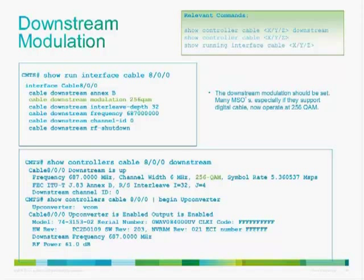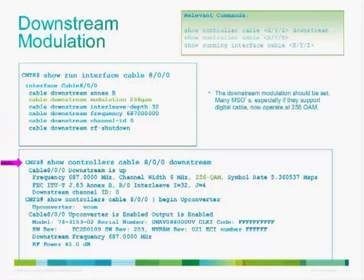Modulation is another requirement when first configuring a cable interface. Under the interface, use 'cable downstream modulation' with choices of 256 QAM, 16 QAM, or 64 QAM. The show controller command will show the modulation — for example, 256 QAM — right alongside the frequency.